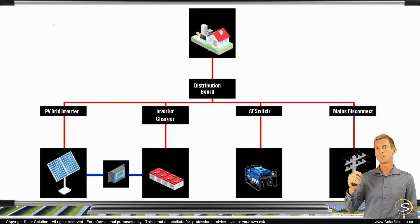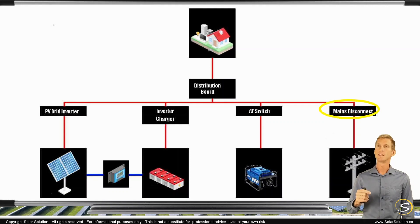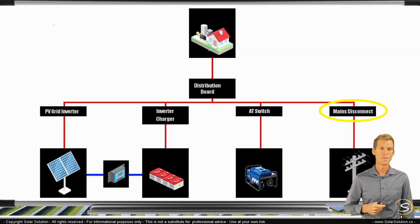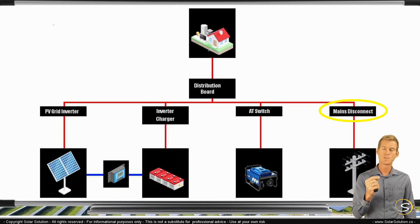Then we have a similar functionality in the main disconnect. So again, this is a heavy duty switch in between your grid and your local AC grid, so that you are in control whether or not you are connected to the grid. It can be activated or deactivated based on many different scenarios and arguments. But through this switch, you have control whether or not you're connected to the grid.